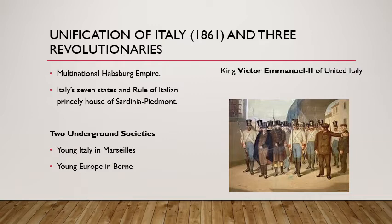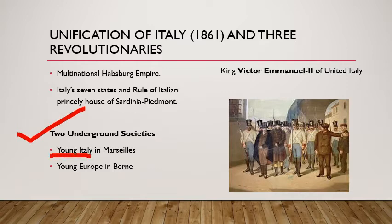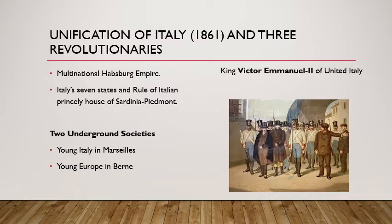The unification process was led by the three revolutionaries: Joseph Mazzini, Count Camillo de Cavour, and Joseph Garibaldi. During the 1830s, Mazzini sought to put together a coherent program for a unitary Italian Republic. He organized Young Italy in Marseille and Young Europe in Berne. The failure of revolutionary uprisings in both 1831 and 1848 meant that the responsibility now fell on Sardinia under its ruler King Victor Emmanuel II to unify the Italian states through war.